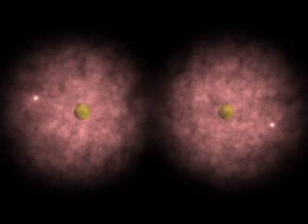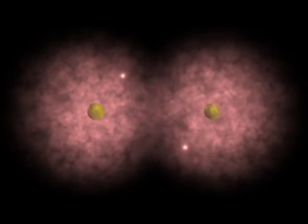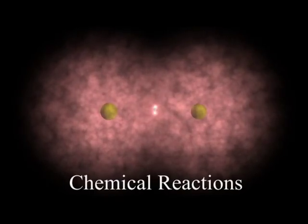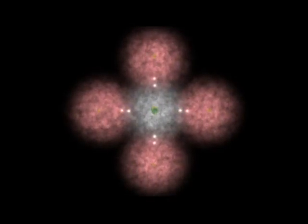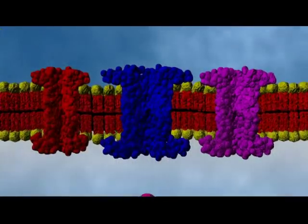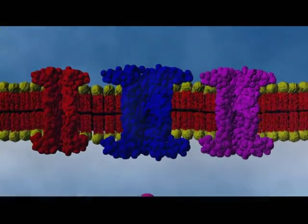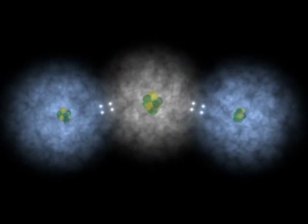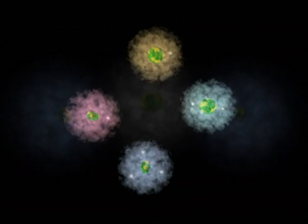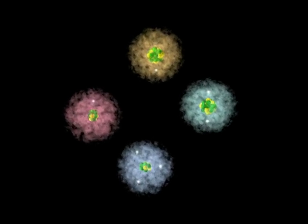Living organisms are built as a result of interactions between atoms, called chemical reactions, that form either charged particles, called ions, or combinations of atoms, called molecules. The survival of all living organisms depends on the flow of various ions and on the synthesis of thousands of different kinds of molecules within their cells. To understand how ions and molecules are formed, we need to know a little bit about the structure of the atoms out of which they are made.